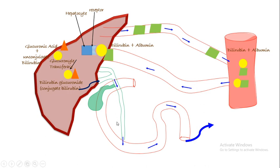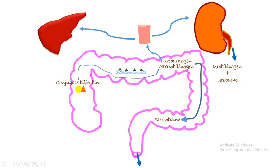It enters the GIT via the biliary canal. Once in the colon, it undergoes further modification by several bacteria and enzymes, becoming urobilinogen and stercobilinogen. The majority of the compounds are excreted in the feces as stercobilin, which gives the yellow color to feces.